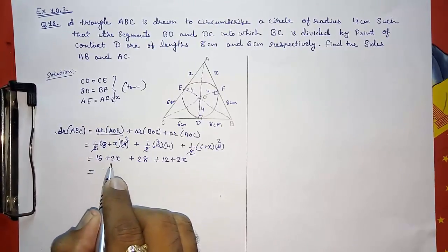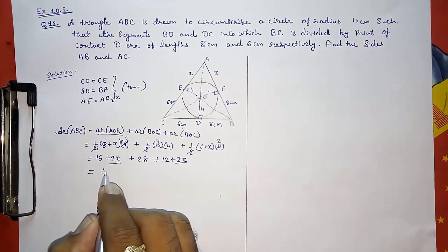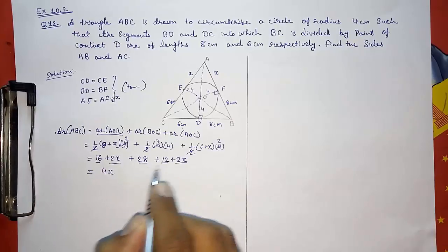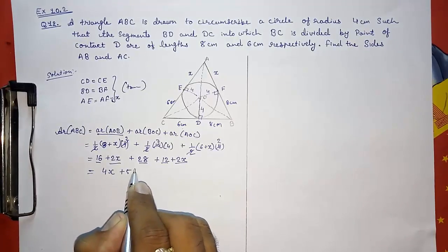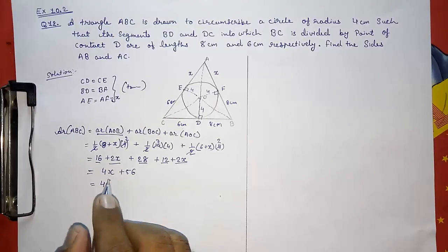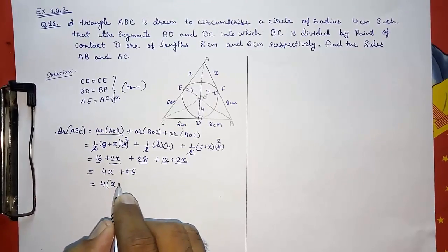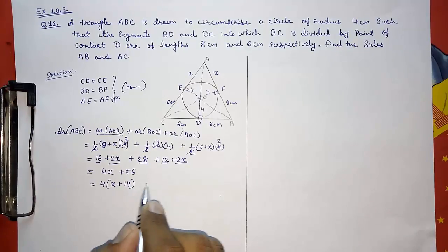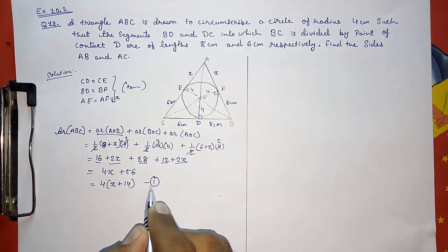So this way we can find the area of ABC by dividing it into 3 parts. Now you can see you are having 2X and 2X, so 4X. And 16 plus 28 plus 12 gives you 56. Now you just take out 4 common here. I will tell you why I had taken out 4 common. So it will be 4 into bracket X plus 14. Take it as result number 1.